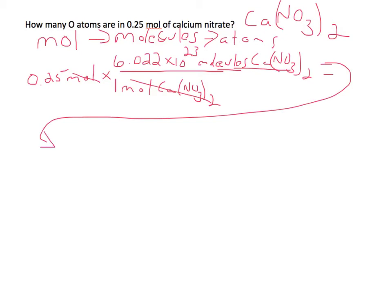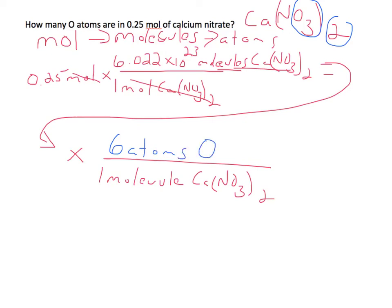Where now we're converting molecules to atoms. So we're multiplying by, in one molecule of calcium nitrate, we have how many atoms of oxygen? And so if we come back up here, we see that we have 3 atoms of oxygen times 2. So we have a total of 6 atoms of oxygen.